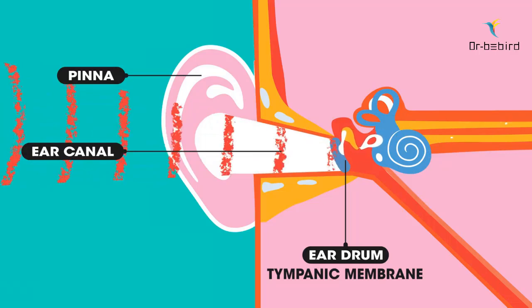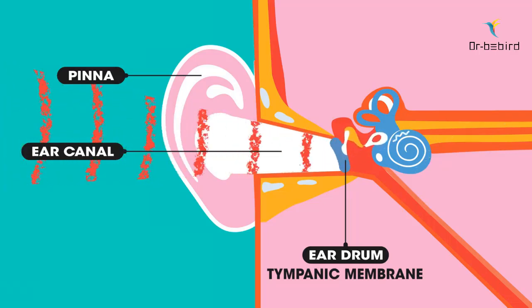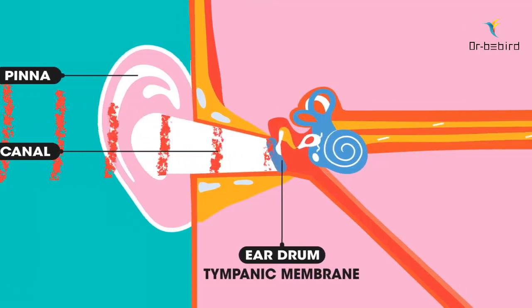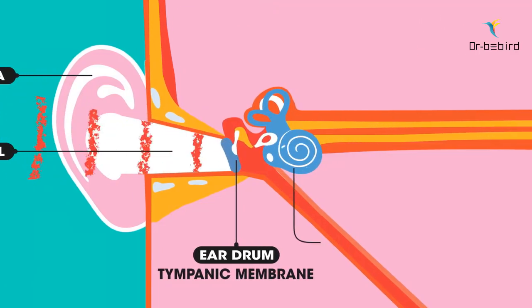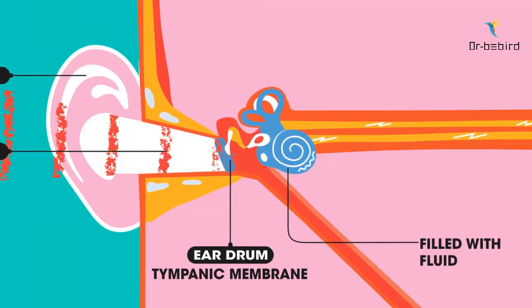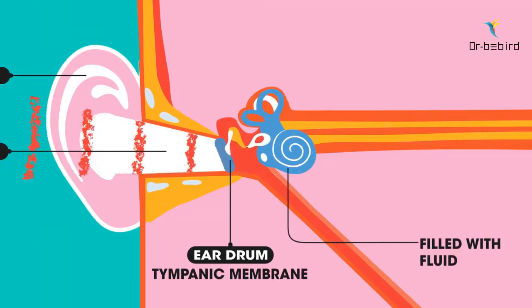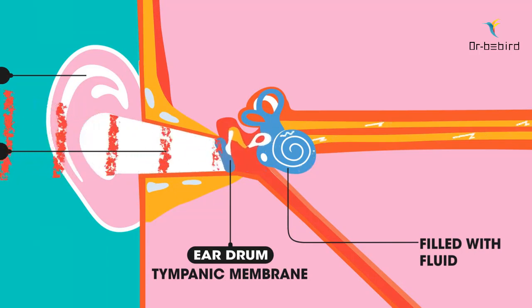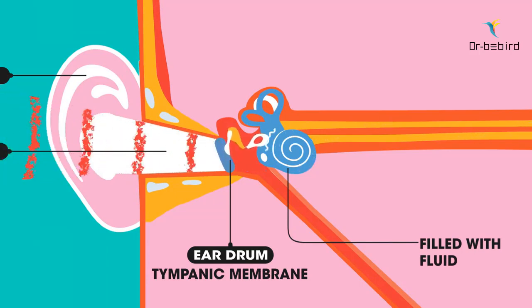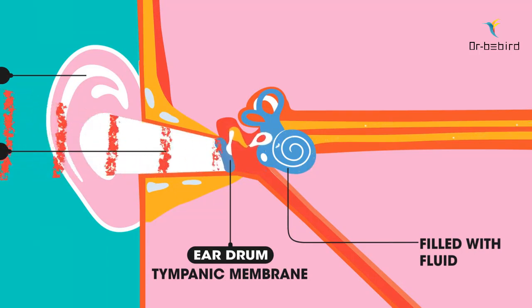Sound waves cause the eardrum to vibrate. The cochlea is filled with fluid, so as the eardrum vibrates, the vibrations pass onto the fluid.